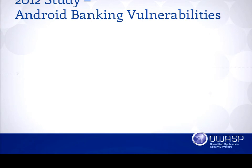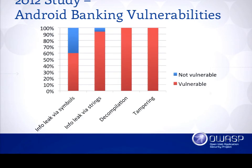We also looked at the financial vertical in particular — banking specifically. We looked at the top 35 Android banking apps for 2012 and found four common themes. You could decompile every single application. You could effectively tamper and modify the code of every single app. There was information leakage within the application via symbols and strings — you could do a decompilation and see particularly sensitive methods, class fields, and things that would be very tempting to modify or inspect if you were an attacker.